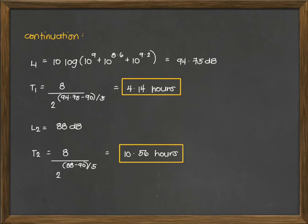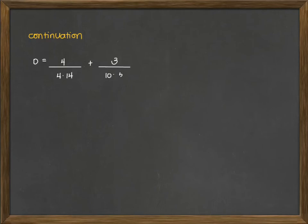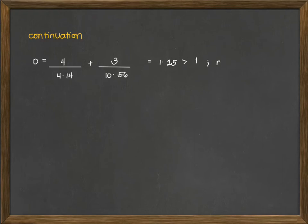Taking note of T1 = 4.14 and T2 = 10.56, we compute the noise dose: D = 4/4.14 + 3/10.56, which gives a value of 1.25. This is greater than 1, which gives us the conclusion that this setup is not acceptable under OSHA's standard.